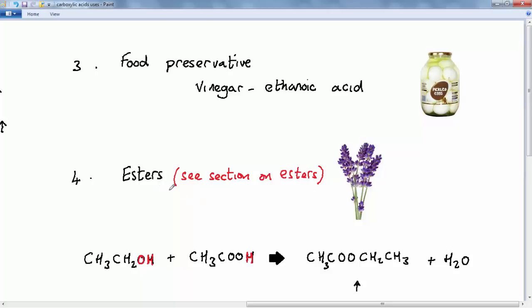Now esters are organic compounds that smell nice. So wherever you get a nice smelling thing in nature whether it's a fruit or a flower for example. There we go. Then that will be some type of ester which is producing that nice smell. So lavender flowers produce some type of ester which smells nice.